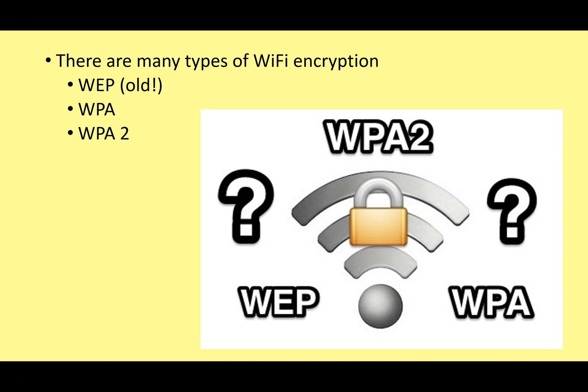There are different types of Wi-Fi encryption: WEP, WPA, and WPA2. We don't use WEP anymore — it's very old and the method to crack it is commonly known. WPA and WPA2 are better, but even WPA2 has had some problems recently, with lots of patches released to fill holes in its security.